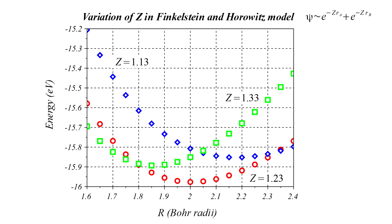If we examine the variation of energy with nuclear separation, r, for different values of the parameter z, we obtain different curves with different energy minimums at different values of r. The blue diamonds correspond to z equals 1.13, with minimum at r equals 2.2. The red circles correspond to z equals 1.23, with minimum at r equals 2. The green squares correspond to z equals 1.33, with minimum at r equals 1.85.